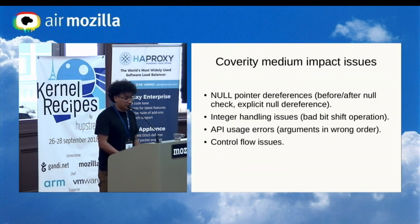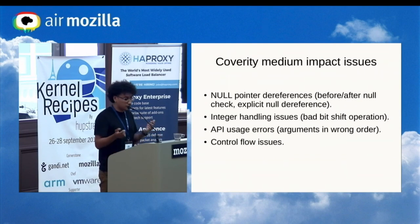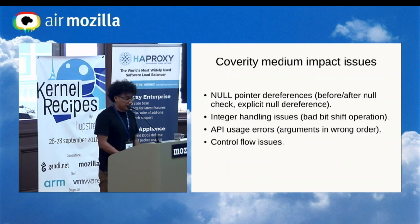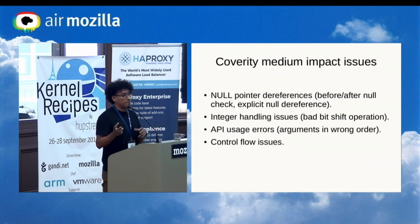The other set is medium impact issues. This includes null pointer dereferences — either before or after a null check, or explicit null dereferences — integer handling issues such as bad bit shift operations, and API usage errors where a function is called with arguments in the wrong order.